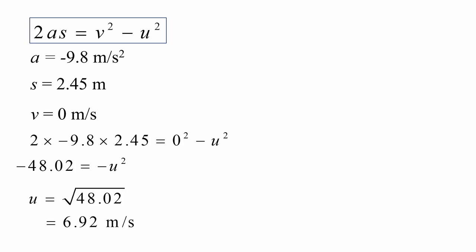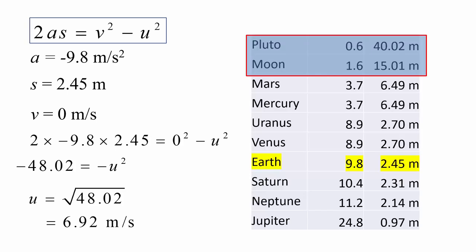So that means here on Earth, the world champion high jumper would have jumped with an initial velocity of 6.92 meters per second to reach a maximum height of 2.45 meters. Now let's use that information to work out the maximum height on other planets. And if we do that, this is the summary.